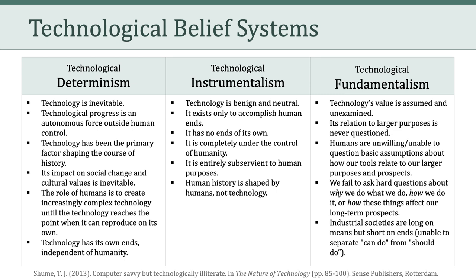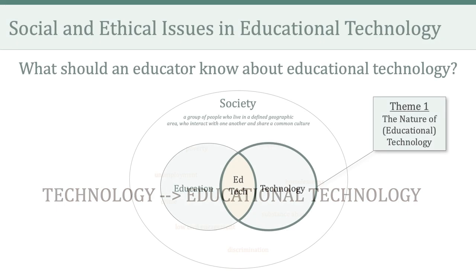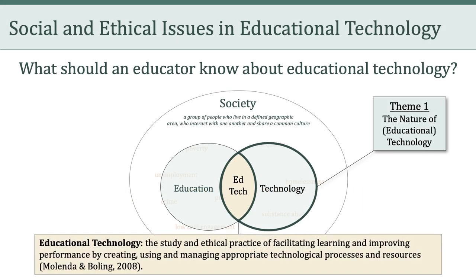Those are three different technological belief systems that are important. As Shum argues, someone who is really technologically literate should be able to recognize and argue against these various belief systems. Now, what is educational technology? One definition is: it's the study and ethical practice of facilitating learning and improving performance by creating, using, and managing appropriate technological processes and resources. What I like about this definition is it underscores both the ends — facilitating learning and improving performance — as well as the means: creating, using, and managing appropriate technological processes and resources.